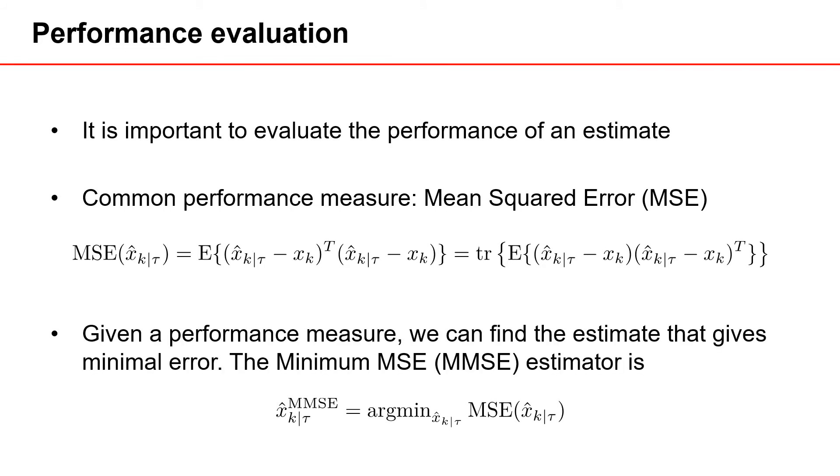Given a performance measure, we can find the estimate that gives us the minimal error. For example, the Minimum MSE (MMSE) estimator is given by the argument that minimizes the MSE.